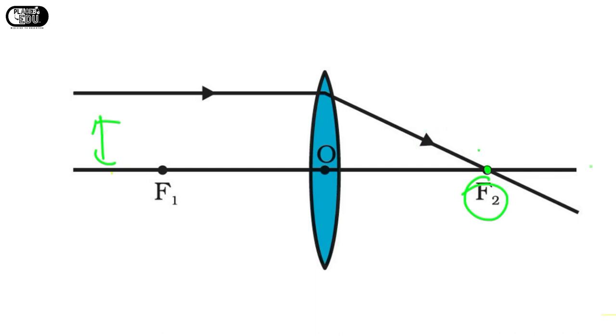Understood? If it is parallel before refraction, then after refraction it will pass through the focal point F2.